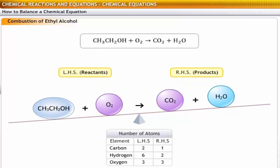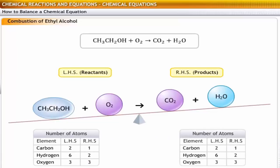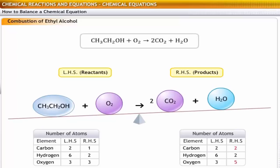Step 2 is to check the number of atoms of each type on either side. Here we have two carbon atoms on the left-hand side but only one on the right-hand side, and six hydrogen atoms on the left-hand side but only two on the right-hand side. Let us begin balancing the equation by selecting carbon. There are two atoms of carbon on the reactant side but only one atom on the product side. So, to balance this, add the coefficient 2 before carbon dioxide on the right-hand side.